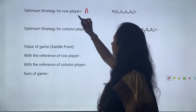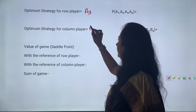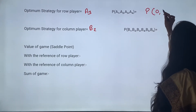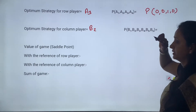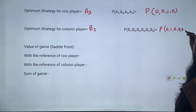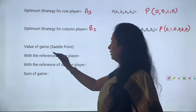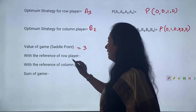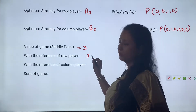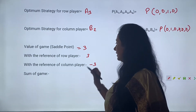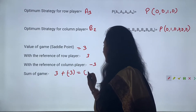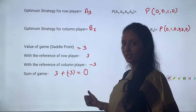Optimum strategy for row player is A3, optimum strategy for column player is B2. Probabilities: A1=0, A2=0, A3=1, A4=0; B1=0, B2=1, B3=0, B4=0, B5=0, B6=0. Value of game is the saddle point 3 - with reference of row player that is 3, with reference of column player that is minus 3. Sum of the game: 3 plus minus 3 = 0, that is your 2-person zero sum game.